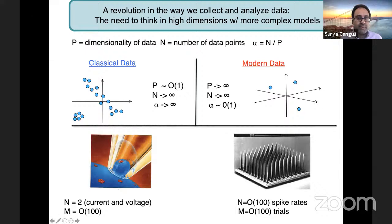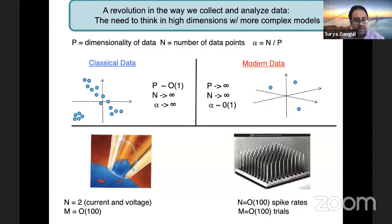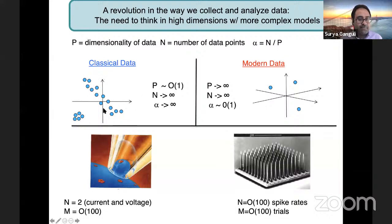If we think about the old way that things were done, we were often working with low-dimensional data. By dimensionality of the data, I mean the number of simultaneous variables that you measure in any one measurement — let's call that P — and let N be the number of data points. In classical neuroscience studies, for example when figuring out the Hodgkin-Huxley model, we knew exactly which variables to measure simultaneously — membrane voltage and current across the neuron. We could take those measurements in many, many conditions. So our data points would be lots of points in a very low-dimensional space. In that situation it's easy to do regression, fit curves, even fit nonlinear differential equations, and see clusters.